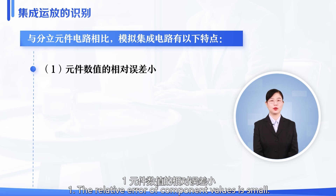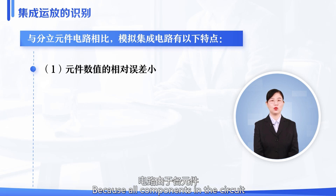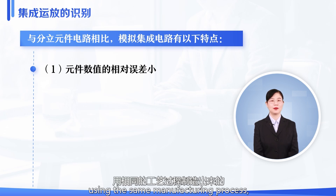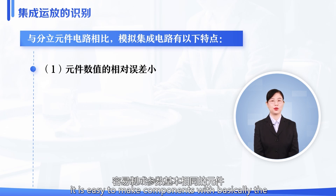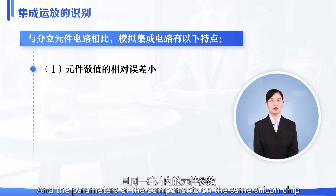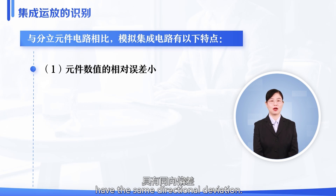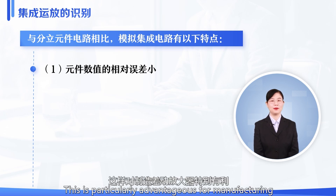Characteristic 1: The relative error of component values is small, because all components in the circuit are made on the same silicon chip using the same manufacturing process. It is easy to make components with basically the same parameters, and the parameters on the same silicon chip have the same directional deviation. The temperature uniformity is good, which is particularly advantageous for manufacturing differential amplifiers.